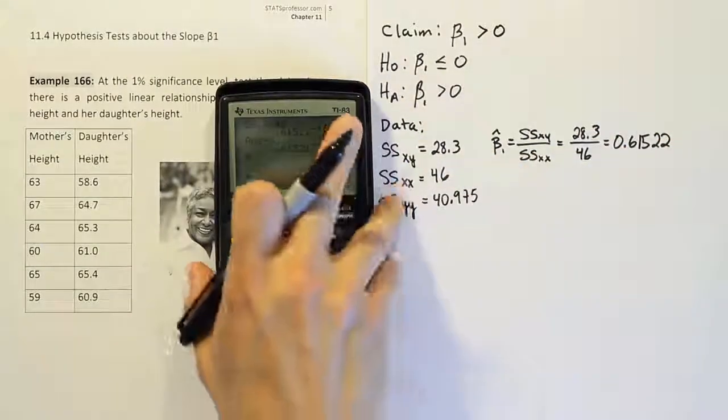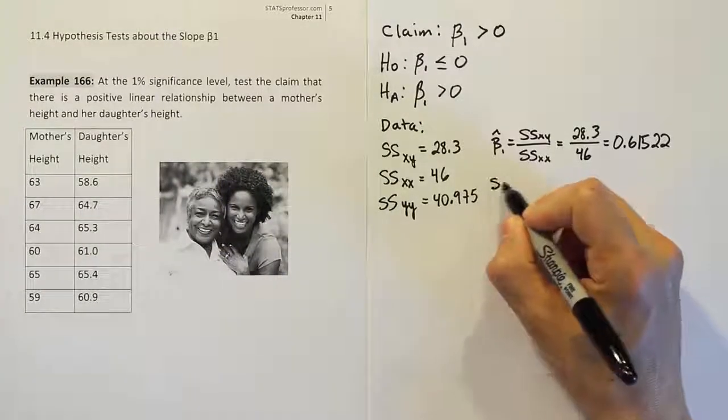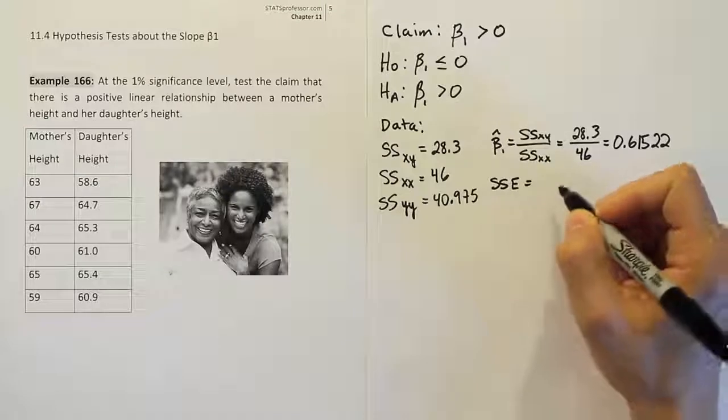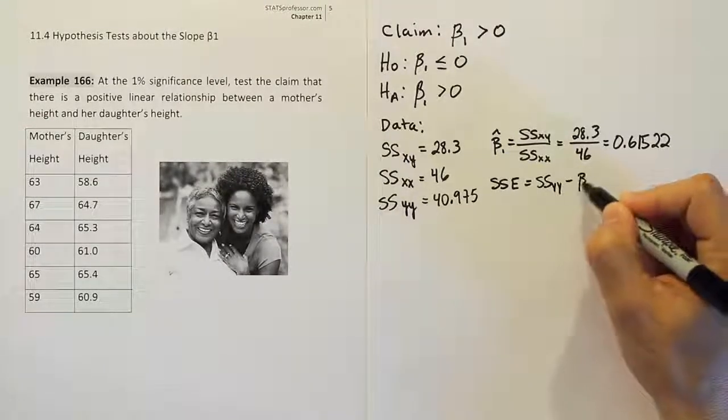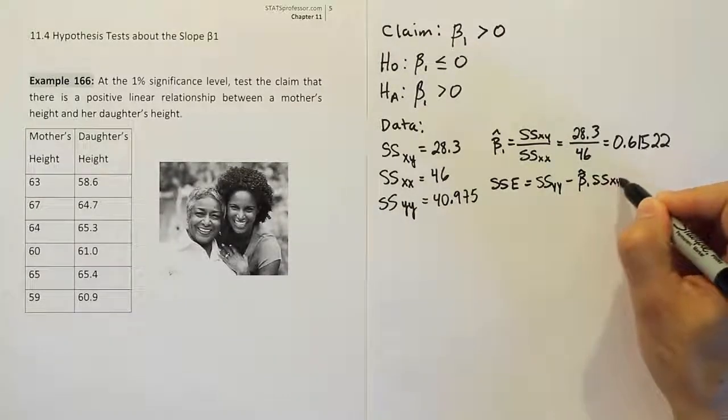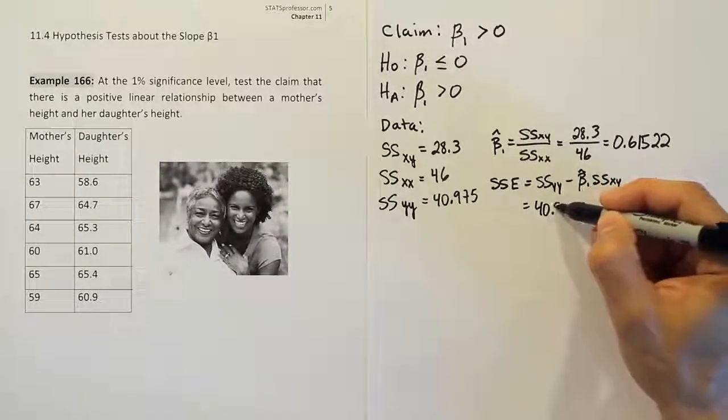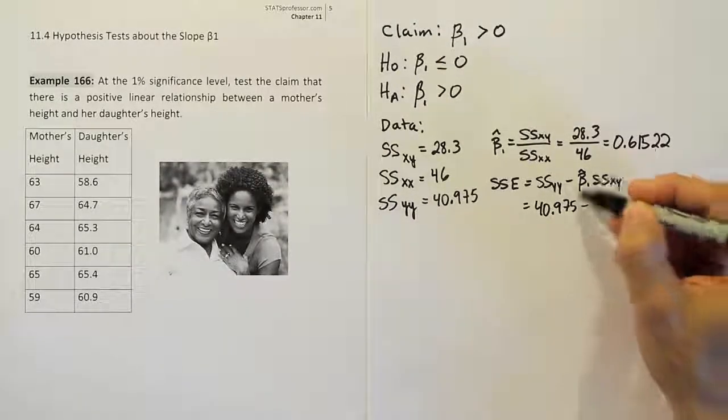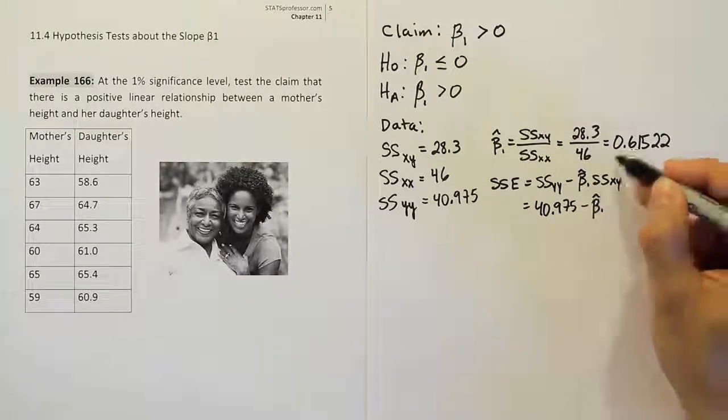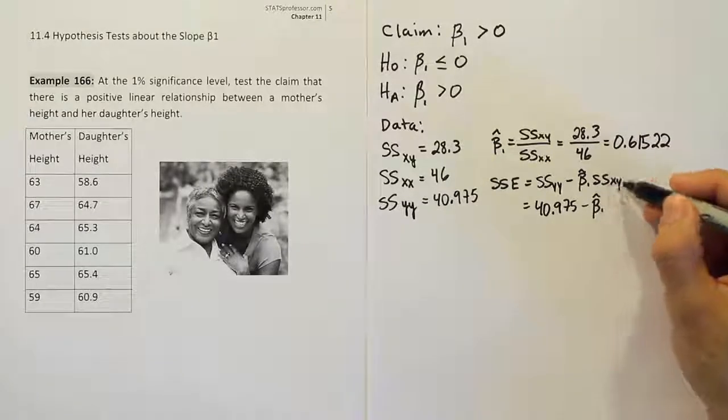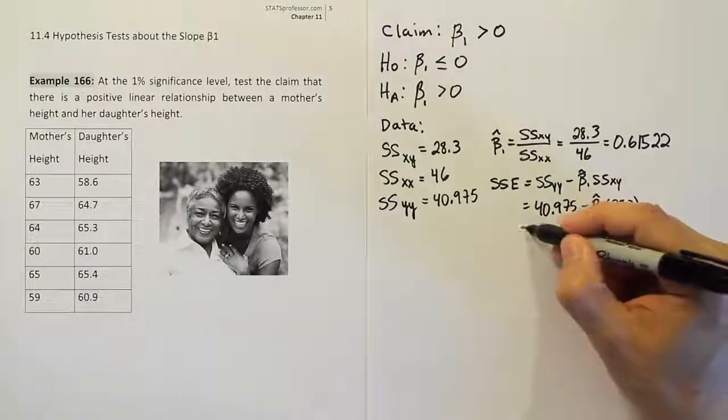From there, we're going to take that number and move on to the next part of the problem. The next part is going to be to come up with the SSE, the sum of square for error. So the error sum of squares is basically SSyy minus the slope estimator times the mixed term, XY. This is the formula that we've used in the past. The YY here is 40.975 minus the β₁ hat we just calculated. So I'm just going to write that in here rather than write out all the decimals, right? Because I'm going to use the full thing in my calculator. And then multiply by the mixed term, which is 28.3. Alright, let's see what that gives us then.